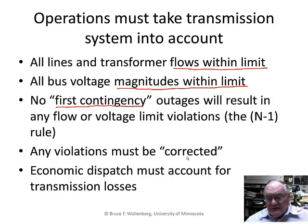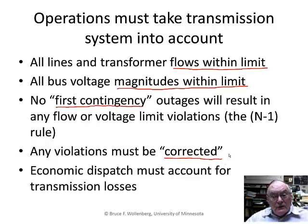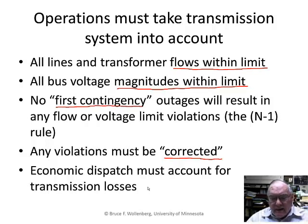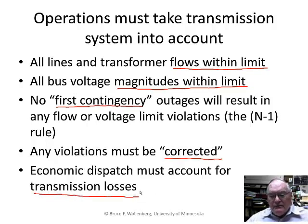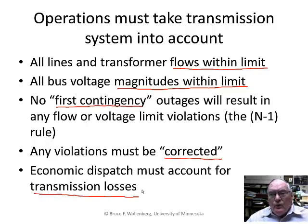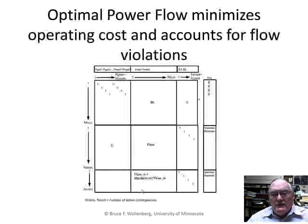Violations must be corrected, usually by changing the pattern of generation — going off of economic dispatch. They must be corrected in real time, as fast as possible. And lastly, economic dispatch must account for transmission losses: the I-squared-R losses that cause lines to heat up. There's a small but significant amount of loss, and while we can't eliminate all losses, we can minimize their economic effect.